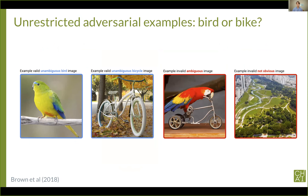You could also remove any restrictions on the attacker, other than that humans can still unambiguously recognize the image. Tom Brown and others are running a challenge to build a model that can reliably distinguish a bird from a bicycle. The attacker can construct images by any technique, including taking photographs, using 3D rendering software, or sampling from a generative model.